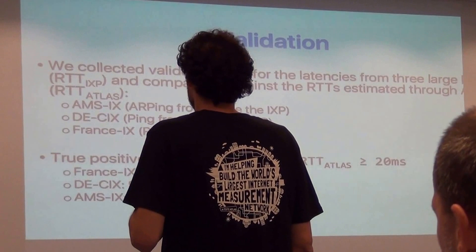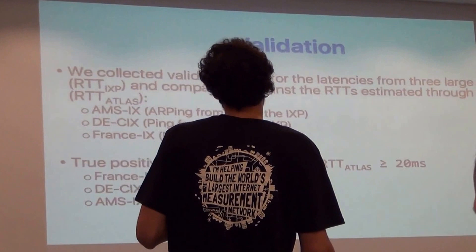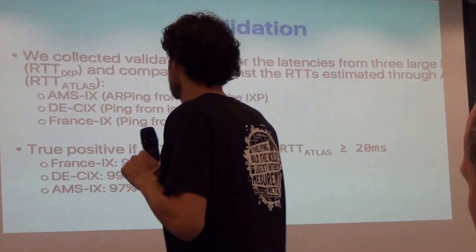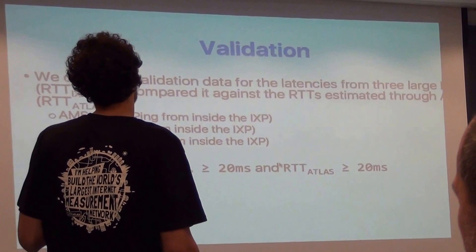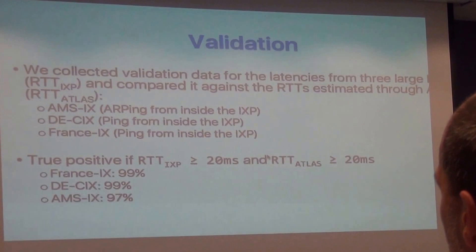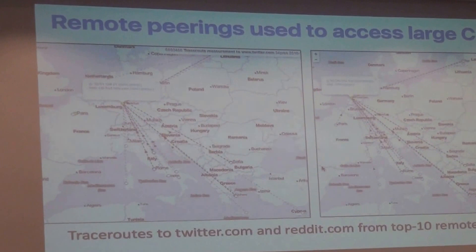We validated against data from three large IXPs for which we had boxes inside the IXPs, and we have really satisfactory results. We say that we have a true positive if both our RTTs and the RTTs from inside the IXPs are over 20 milliseconds, and for all the cases that we've checked, that's pretty accurate.